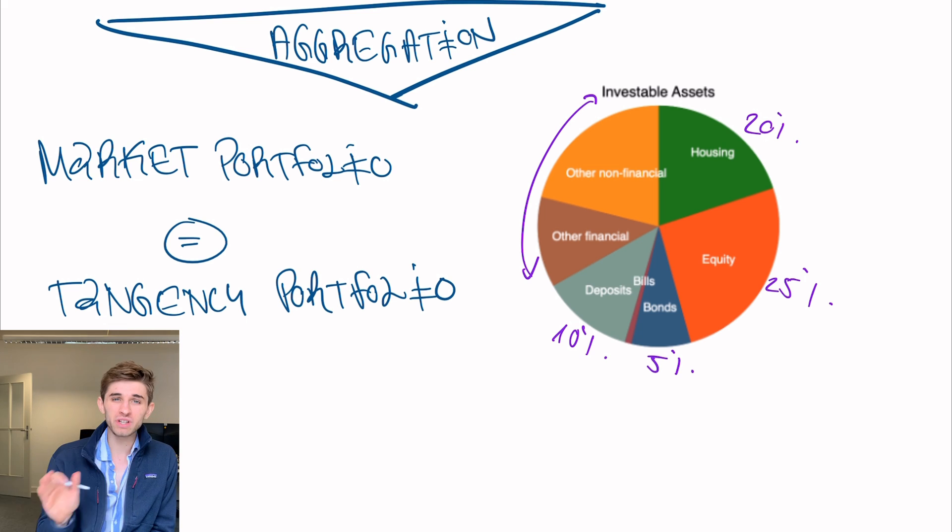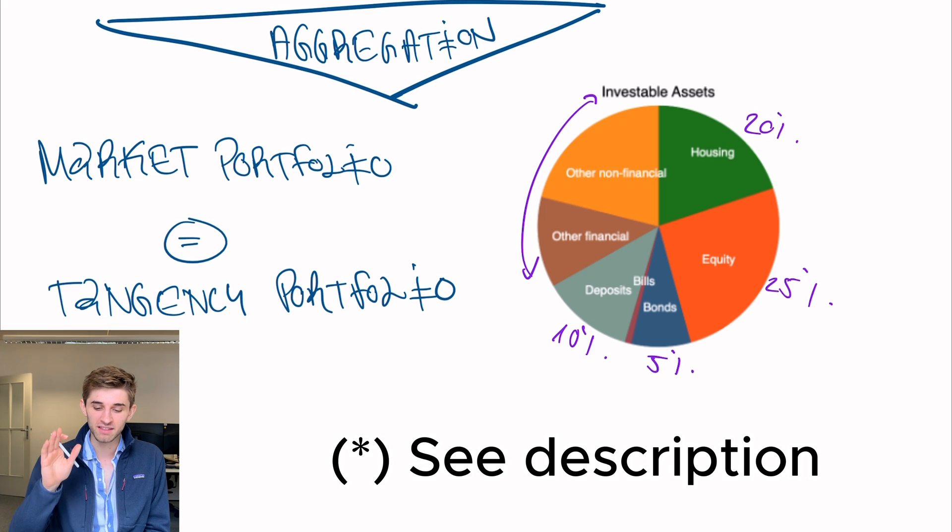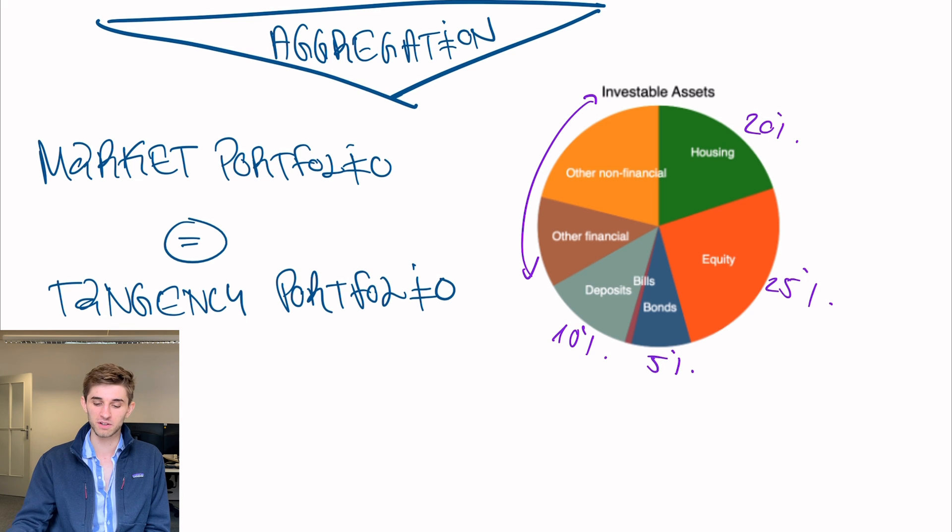So if you truly believe the CAPM, then that is the portfolio you should hold. 25% equity, 20% housing, 5% bonds, and 10% deposits.